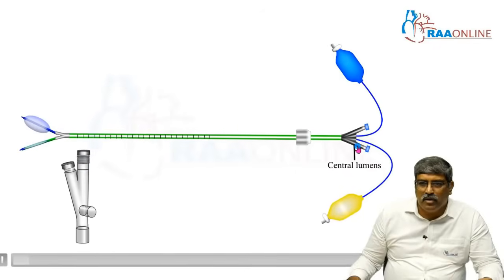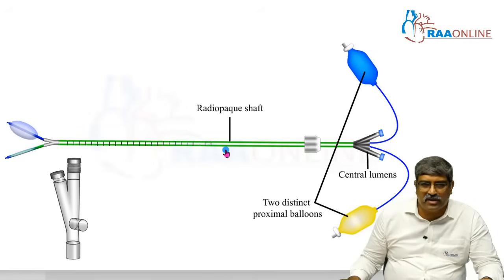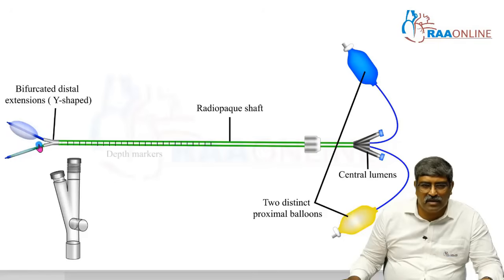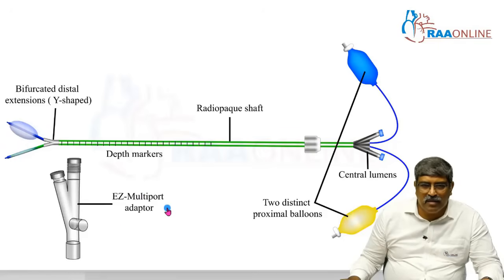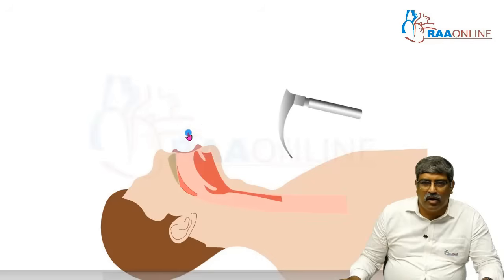The device has a central lumen, two distinct balloons color-coded yellow and blue, a radio-opaque shaft, a bifurcated distal extension in a Y-shape, depth markers, and a multiport adapter used at the proximal end.